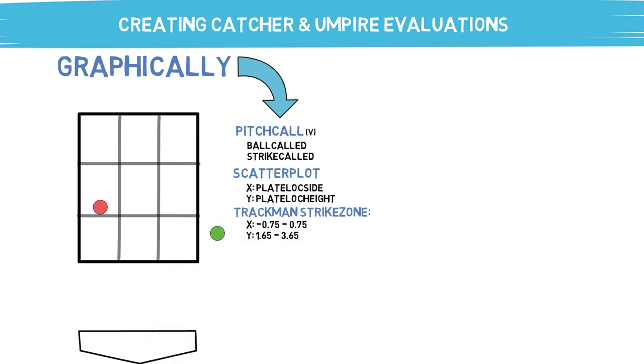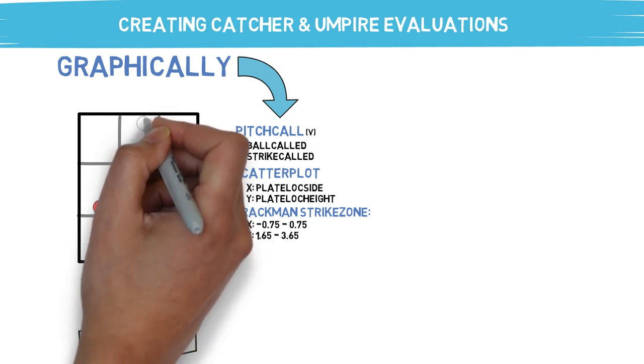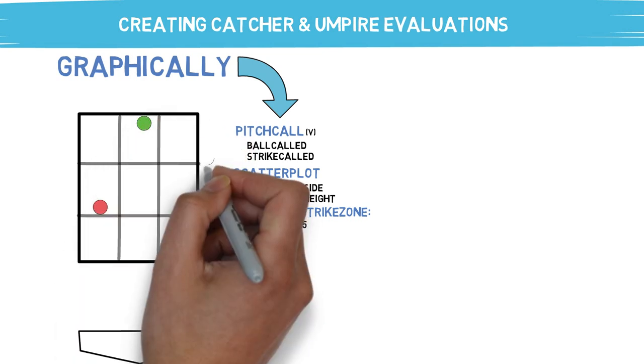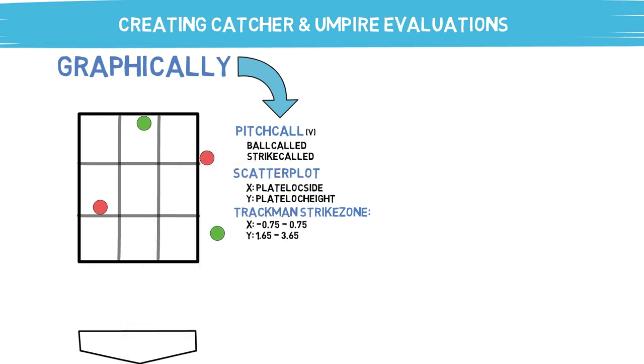In this example, we will have called strikes in red and called balls in green. These reports are specifically useful when seeing strikes that are called balls or balls that are called strikes. Here's an example report that I've done in the past.